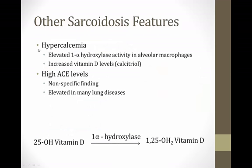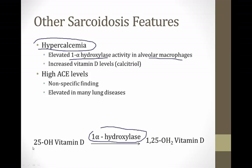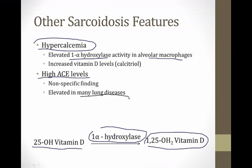Other high-yield features of sarcoidosis, especially for Step 1, include hypercalcemia. Activated alveolar macrophages in sarcoid increase their production of 1-alpha-hydroxylase activity, which catalyzes the conversion of 25-vitamin D to 1,25-vitamin D — the active form — leading to increased calcium levels in the blood. Another finding is elevated ACE levels. ACE is produced in the lungs, and many lung diseases can raise ACE levels, but it is classic for sarcoid. This is technically a nonspecific finding, but the level rises due to pulmonary inflammation.